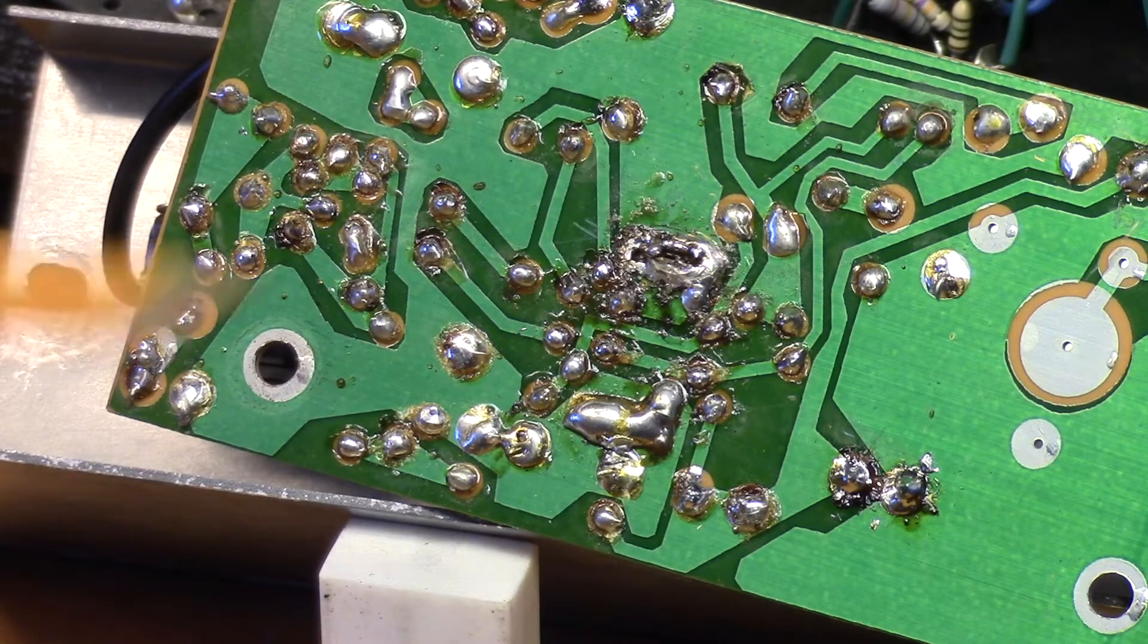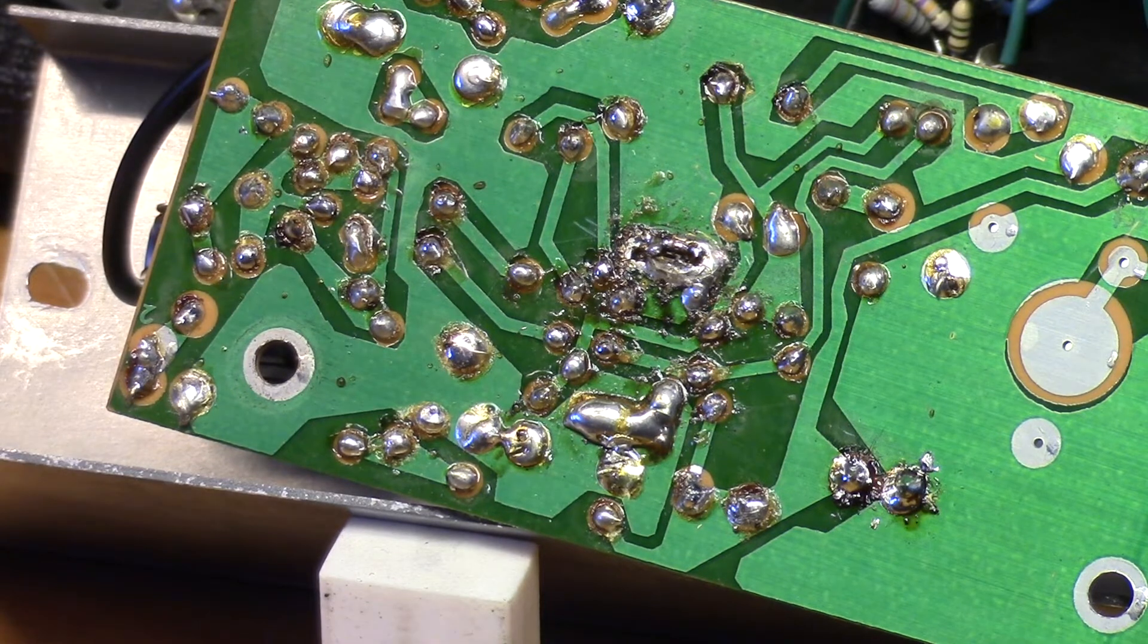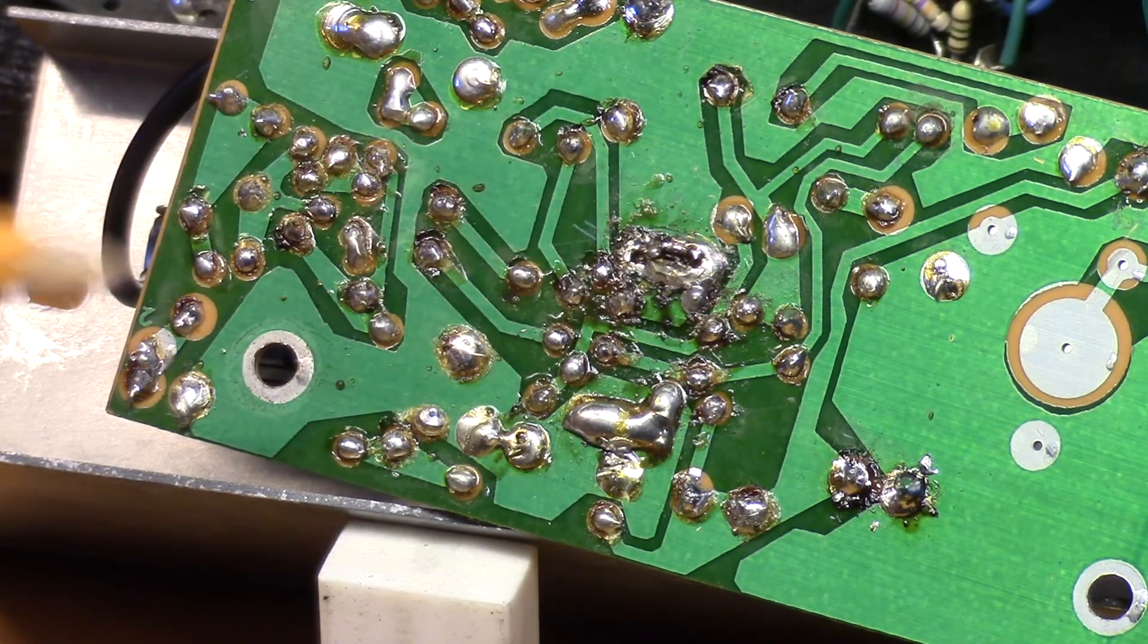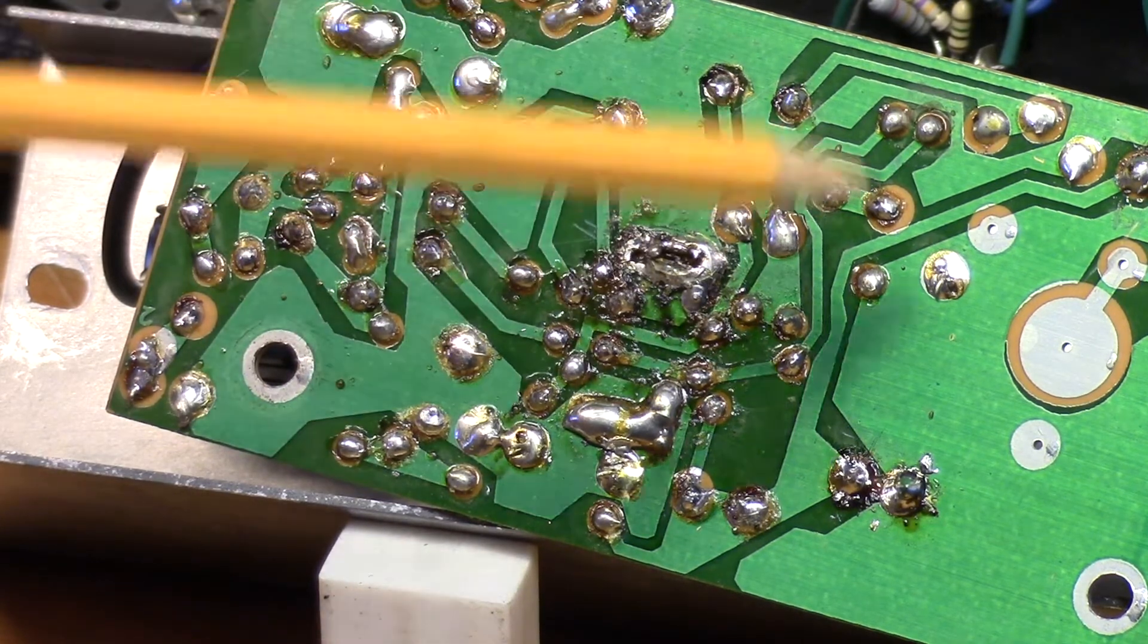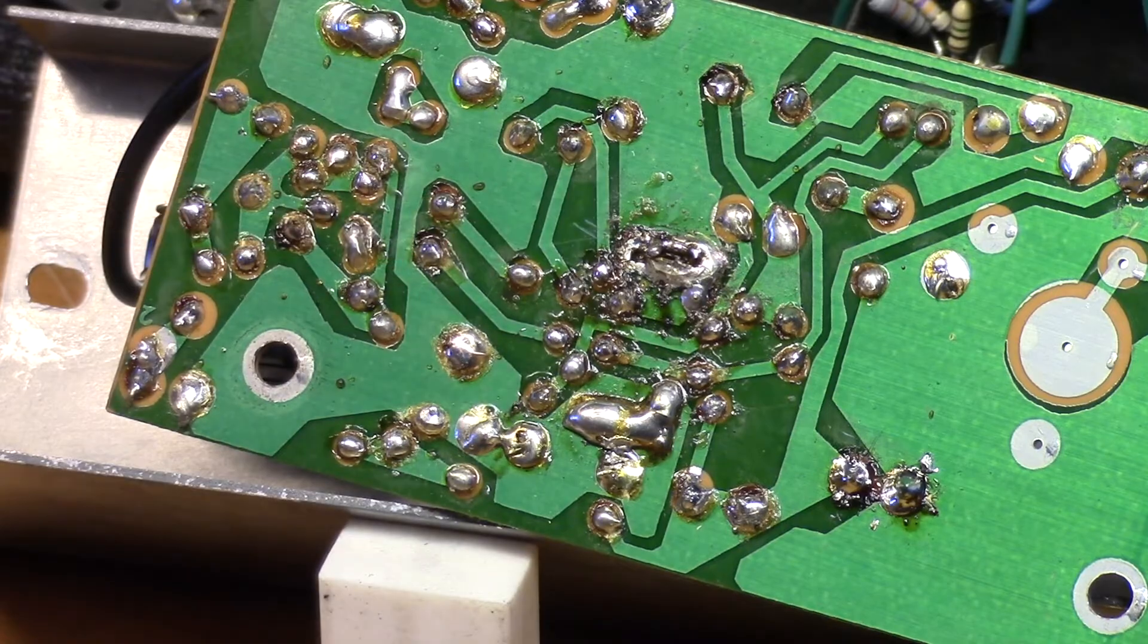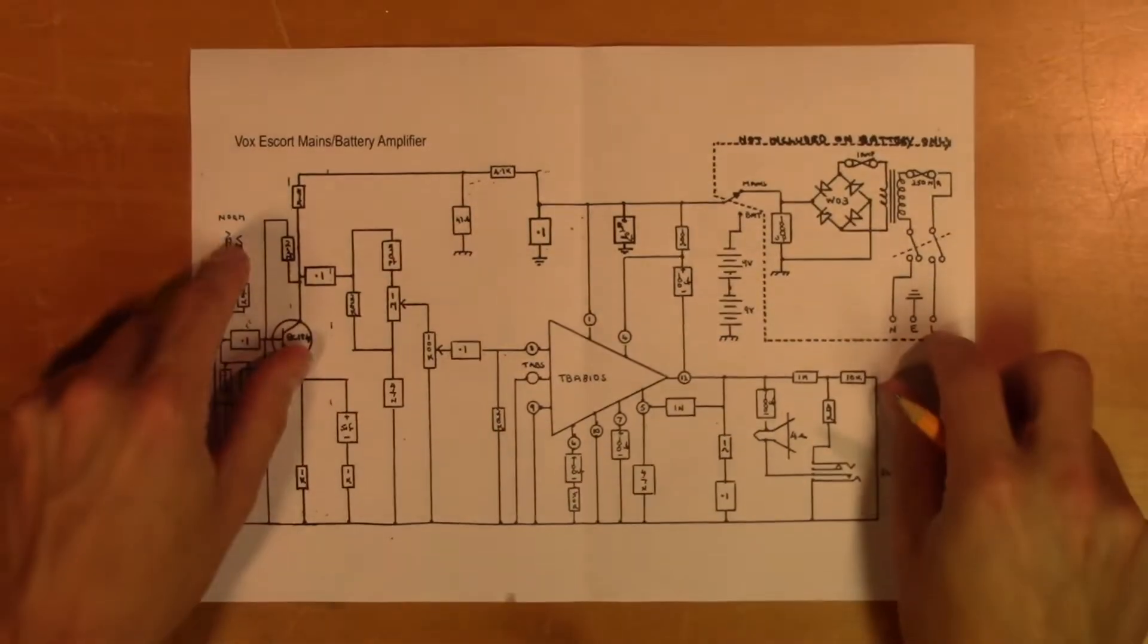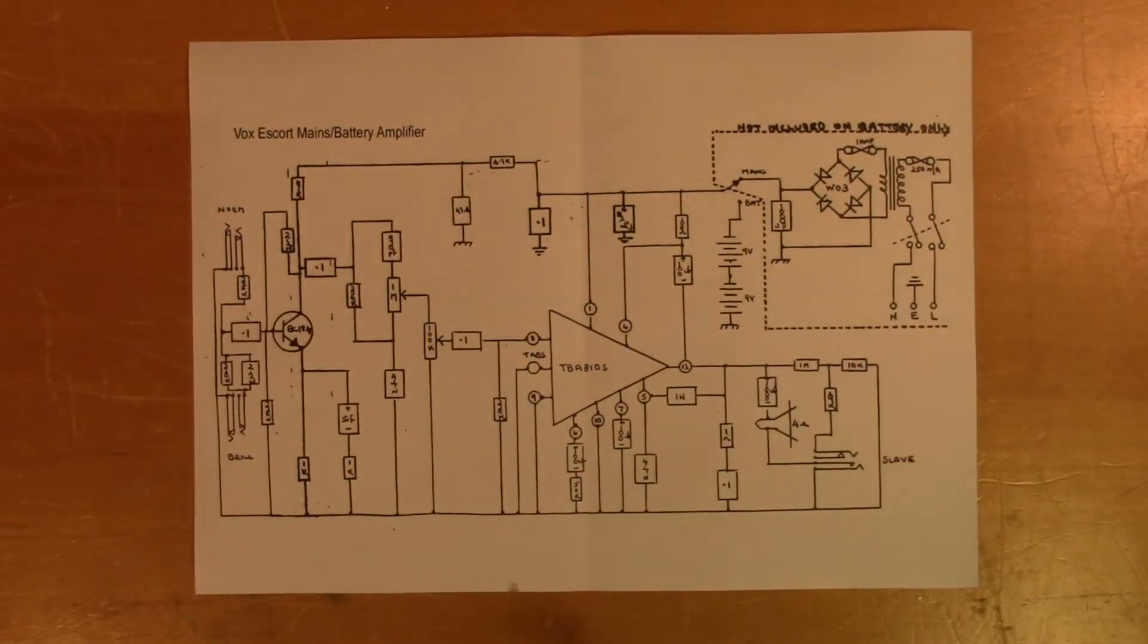Someone has been messing around quite a lot on this PCB. And this part of the heatsink isn't even grounded. It's supposed to be grounded to dissipate the heat to the ground plane. Things like this could cause stuff to overheat. Here we have the schematic for this Vox Escort. It's quite a simple design.